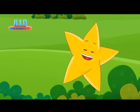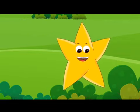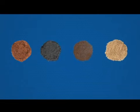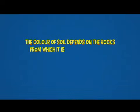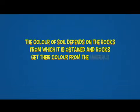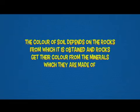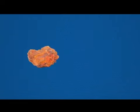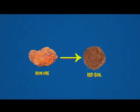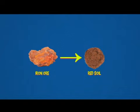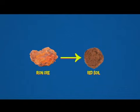Soil varies from place to place on the basis of its color and texture. Based on color, there are different types of soils. These can be red, black, dark brown, light brown and so on. The color of soil depends on the rocks from which it is obtained, and rocks get their color from the minerals they are made of. For example, a rock made of iron ore will have red color, and hence the soil formed from it will also have red color and will be rich in iron.